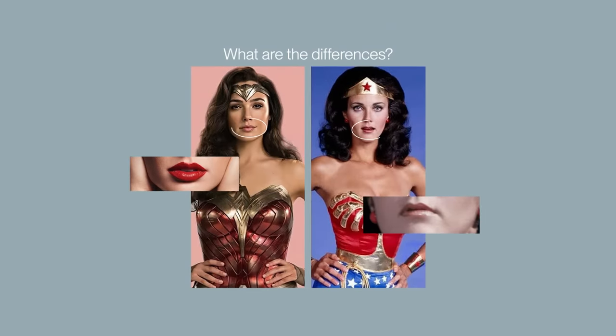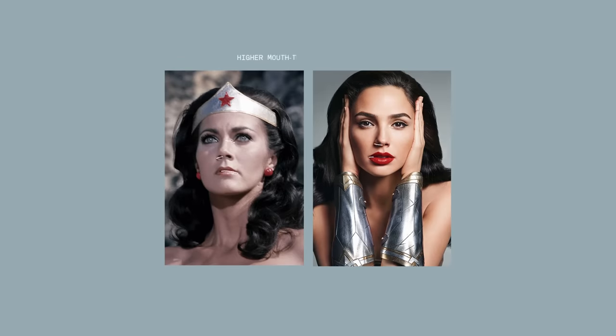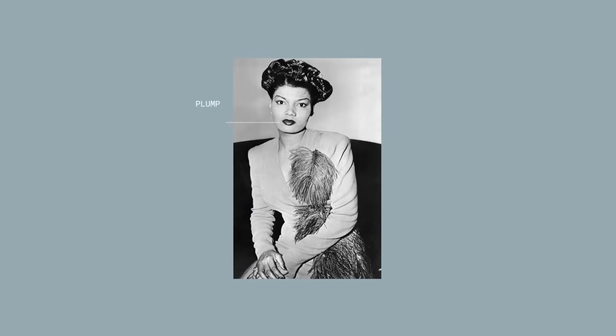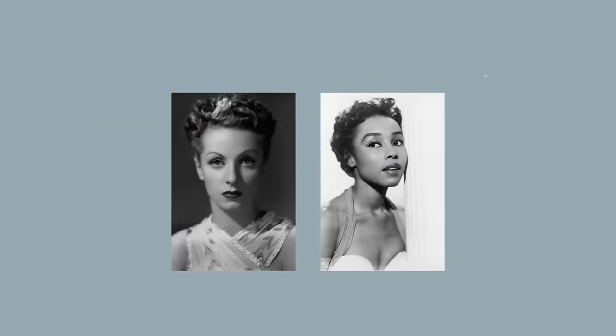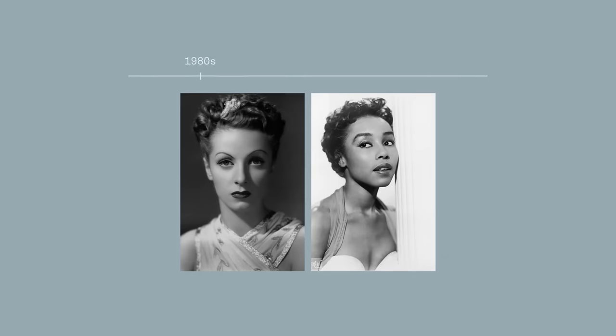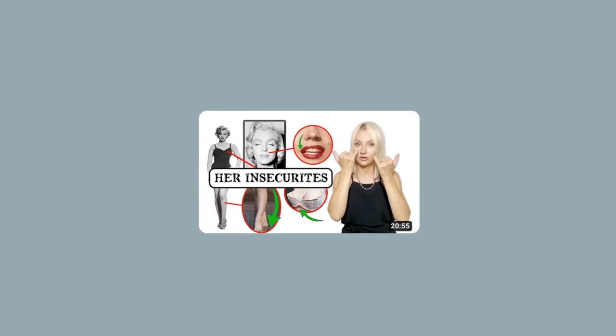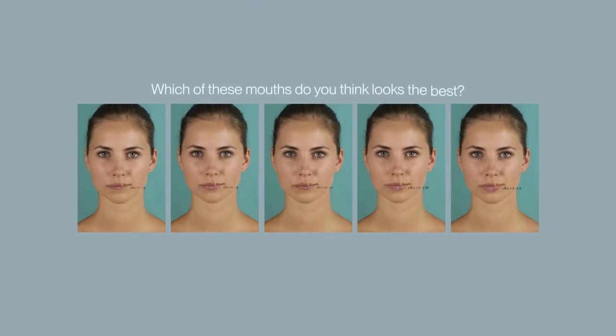What difference do you notice between their lips? Gal's mouth is wider, her lips are bigger, and she has a higher mouth-to-nose width ratio, which fits with modern standards. Somewhat plump lips were also desirable by classical beauty standards, but the preference was closer to a more moderate lip size, and this standard shifted throughout the 1900s, reflected in evolving makeup techniques. Fashion and beauty expert Ali Art notes that Marilyn Monroe didn't overline her lips as much in the latter half of the 1950s.